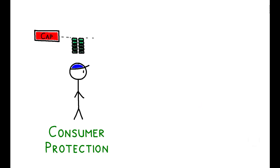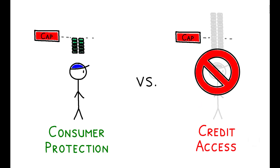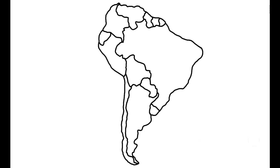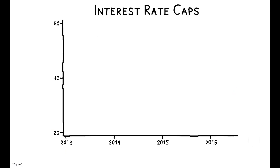What does this look like in the real world? How large are the consumer protection benefits versus the credit access costs of these policies? And how do we weigh them against one another? This paper tackles those questions by studying the effects of regulatory reforms in the Chilean consumer credit market. Interest rate caps have been implemented in various forms in this market since the 1920s, and the authors focus on a set of policy changes enacted in December 2013.